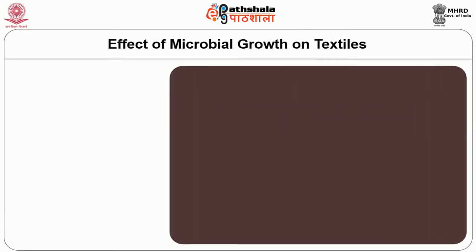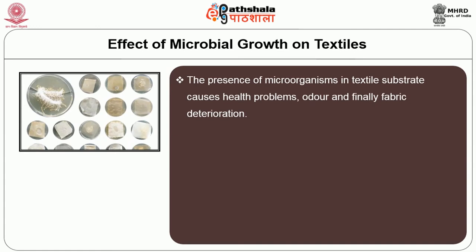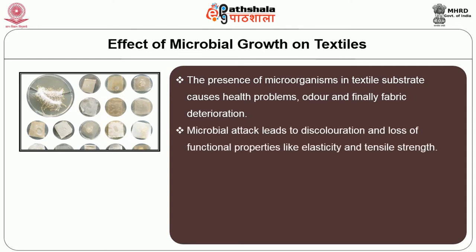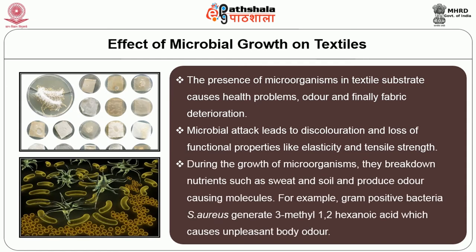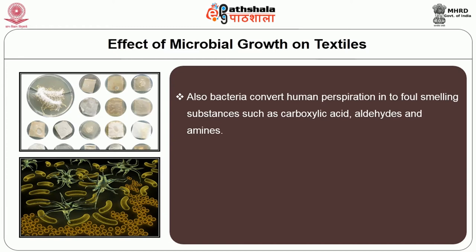Next we will discuss the effect of microbial growth on textiles. The presence of microorganisms in textile substrate causes health problems, odor and fabric deterioration. Microbial attack leads to discoloration and loss of functional properties like elasticity and tensile strength. During growth, microorganisms break down nutrients such as sweat and soil and produce odor-causing molecules. For example, gram-positive bacteria Staphylococcus aureus generate 3-methyl-2-hexanoic acid which causes unpleasant body odor. Bacteria also convert human perspiration into foul-smelling substances such as carboxylic acids, aldehydes and amines.